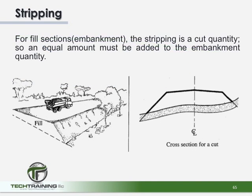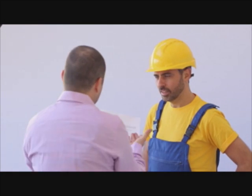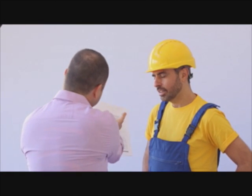It means that in the case of fill sections — sections of the project where fill needs to go in — the stripped quantities must be added to the calculated fill volumes. Let's go ahead and take a look at the actual calculated worksheet and go through it step by step.